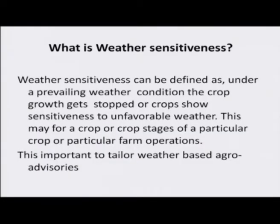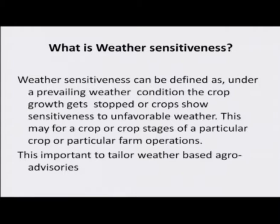This area must be addressed very precisely. Weather sensitiveness can be defined as: under a prevailing weather condition, the crop growth gets stopped. When we were discussing about the cardinal temperature, the minimum temperature required for barley and oats is around 3 degrees centigrade. Suppose the temperature is 1 degree or 0 degree, the crop does not germinate. So weather sensitiveness means under a prevailing weather condition, the crop growth gets stopped or crops show sensitiveness to unfavorable weather.